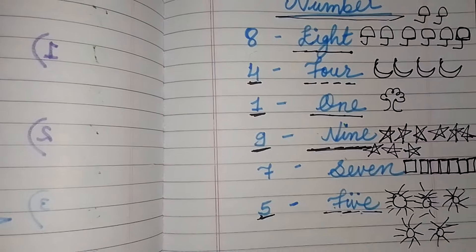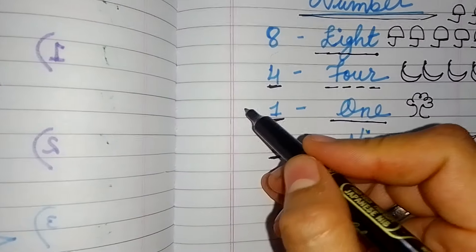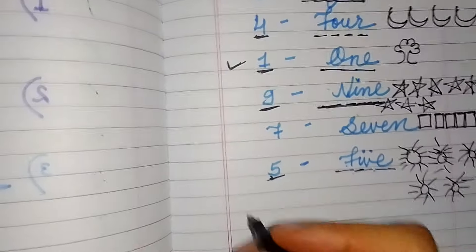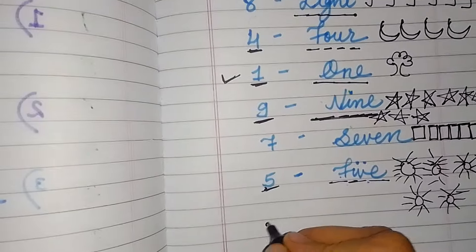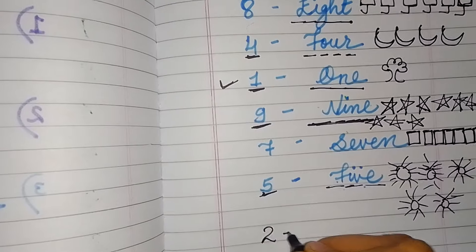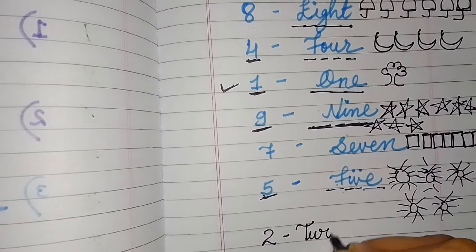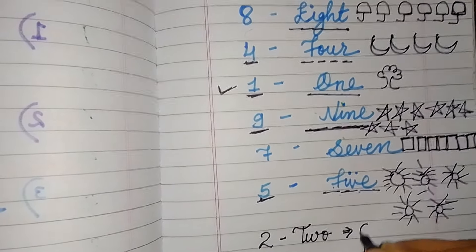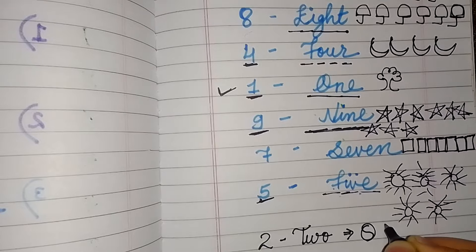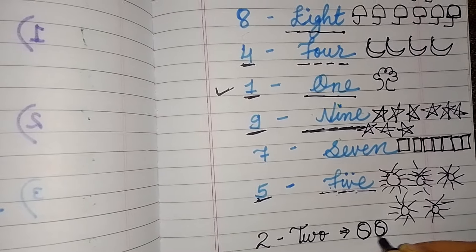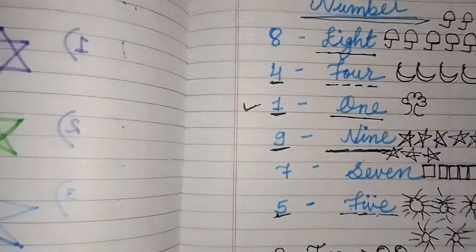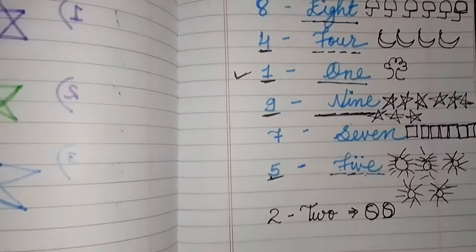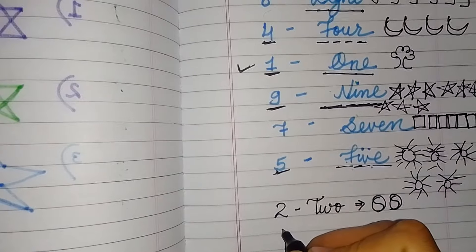Now, which number is missing from one to ten? We got one here, so number two is missing. Two — T-W-O — two. Two balls. Where is number three? Number three is also missing, so we'll be writing three here.